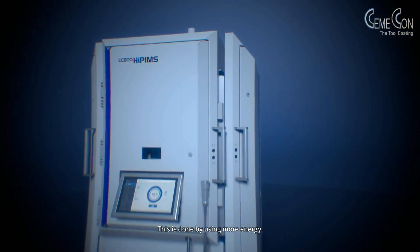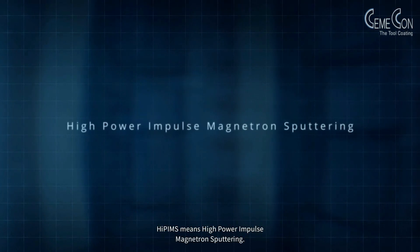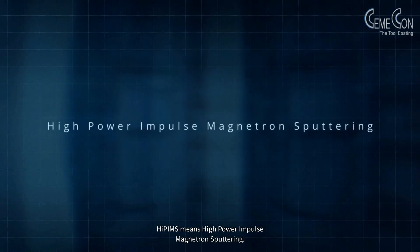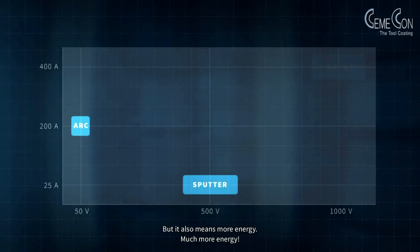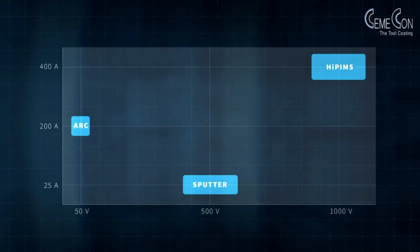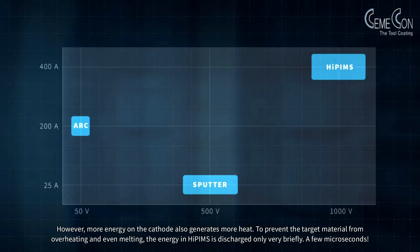This is done by using more energy. HiPIMS means high power impulse magnetron sputtering. But it also means more energy. Much more energy. However, more energy on the cathode also generates more heat.